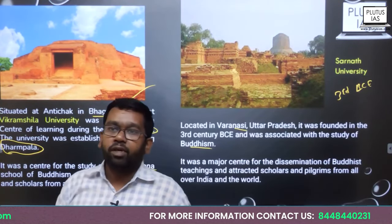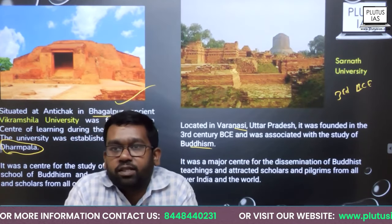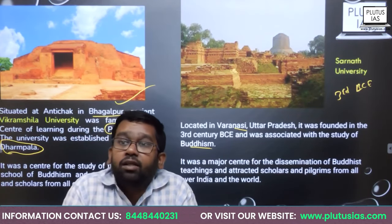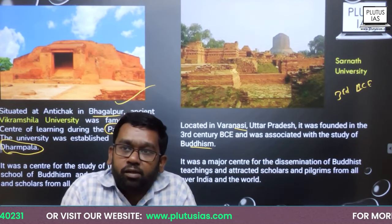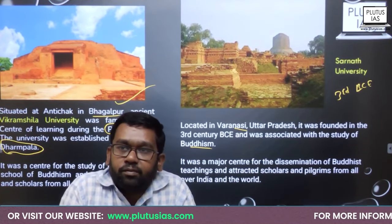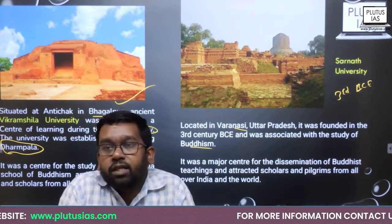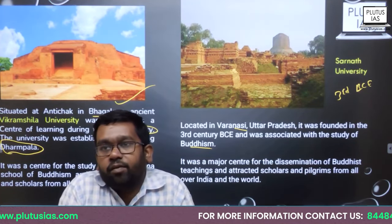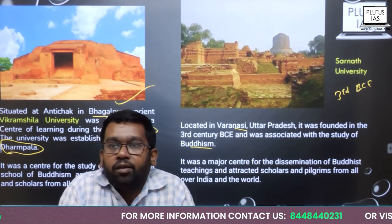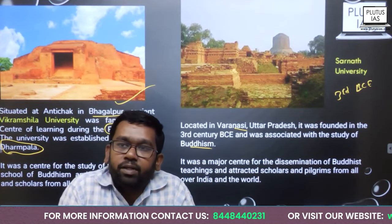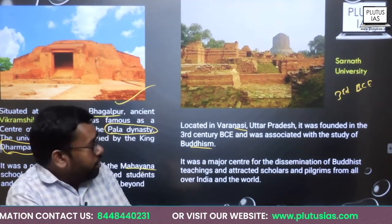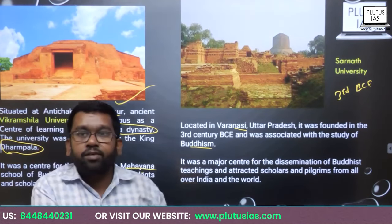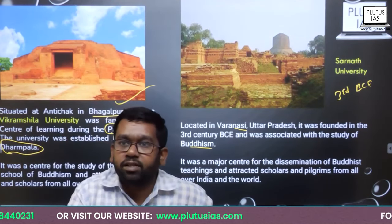So there were four universities. The first university, founded in the 5th century BC, was Taxila. The second was Sarnath University, founded in the 3rd century BC. The third is Nalanda University, founded in the 4th century AD. And the fourth was Vikramshila University, founded in the 7th and 8th century AD. So these are the four major universities we discussed in ancient India.